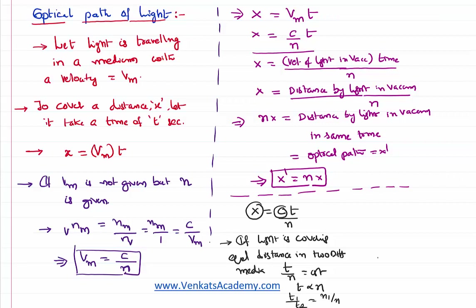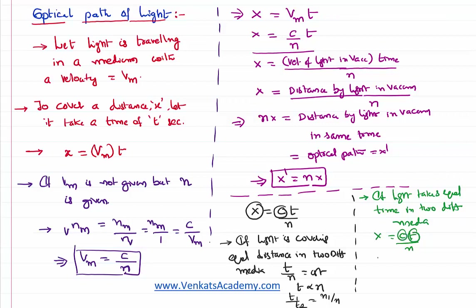You can also consider another question: if somebody says light travels for equal time in two different media, then in that case time is the same and c is the same, so x is inversely proportional to n, or x times n equals a constant — that is, n1 x1 equals n2 x2. We can use this to analyze the optical path of light. Thank you for watching; keep coming back for more video lessons.